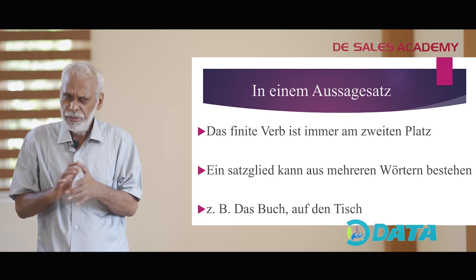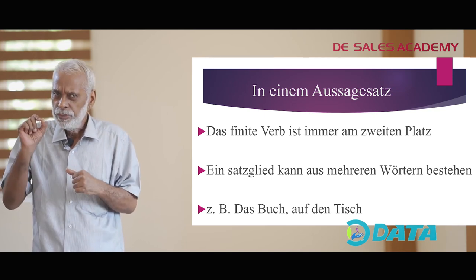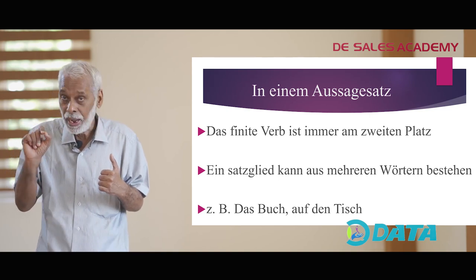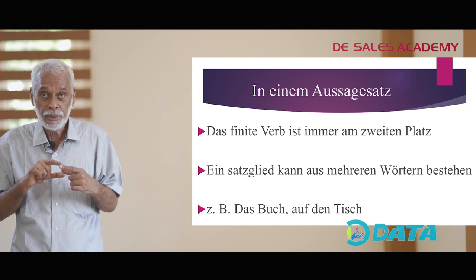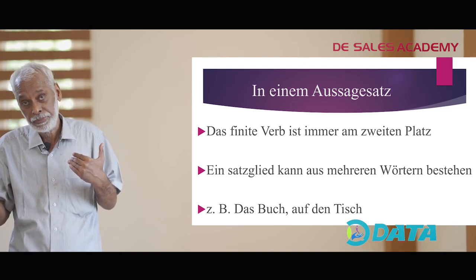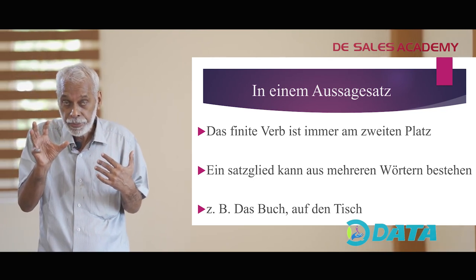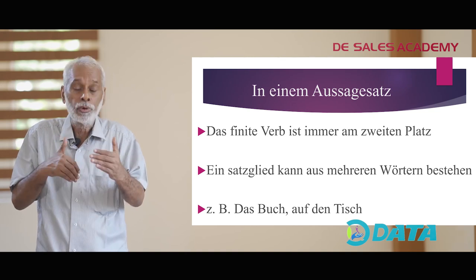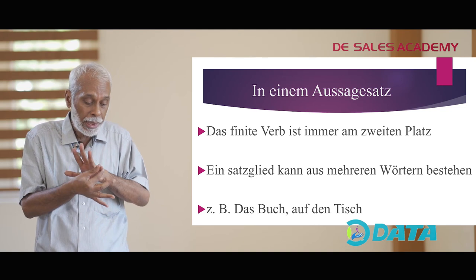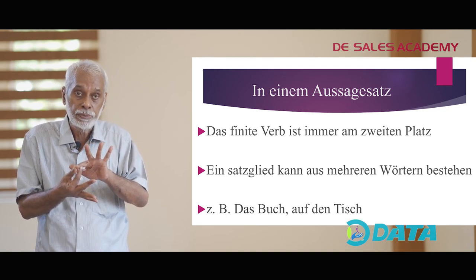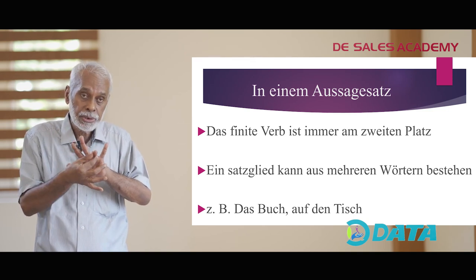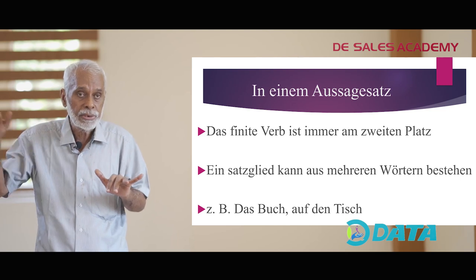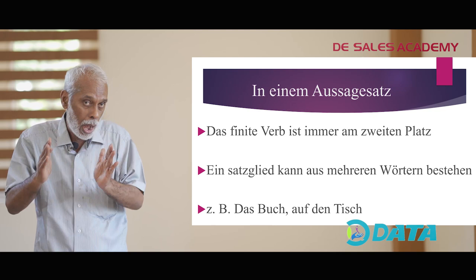Another important thing is: in an Aussagesatz, das finite Verb steht immer am zweiten Platz — das haben wir mehrmals wiederholt. Ein Satzglied kann aus einem Wort oder aus mehreren Wörtern bestehen. A Satzglied — a sentence part — can consist of one single word or a group of words. From our Beispielsatz: Er legt das Buch auf den Tisch. Er — ein Wort; legt — ein Wort; das Buch — zwei Wörter, Artikel und Nomen; auf den Tisch — drei Wörter: Präposition, Artikel und Nomen.